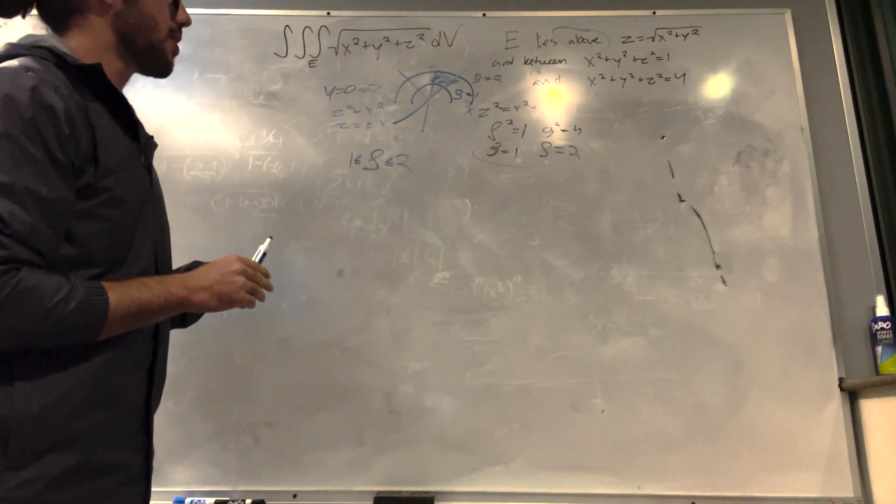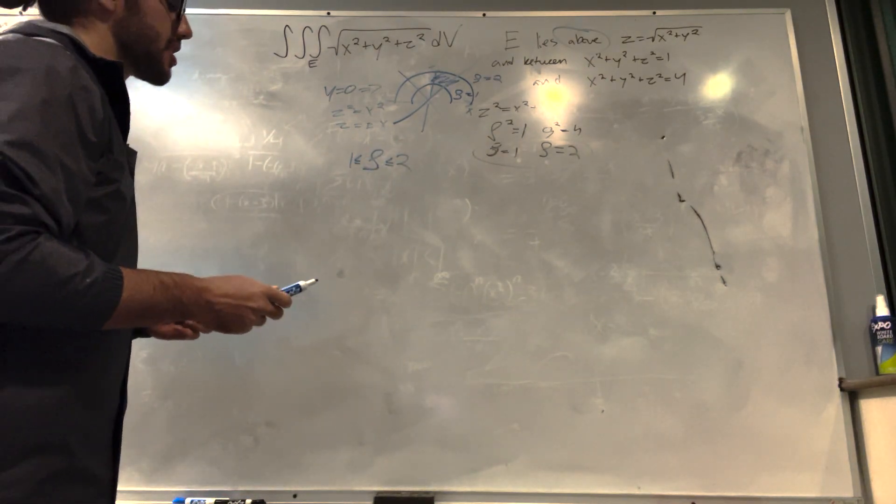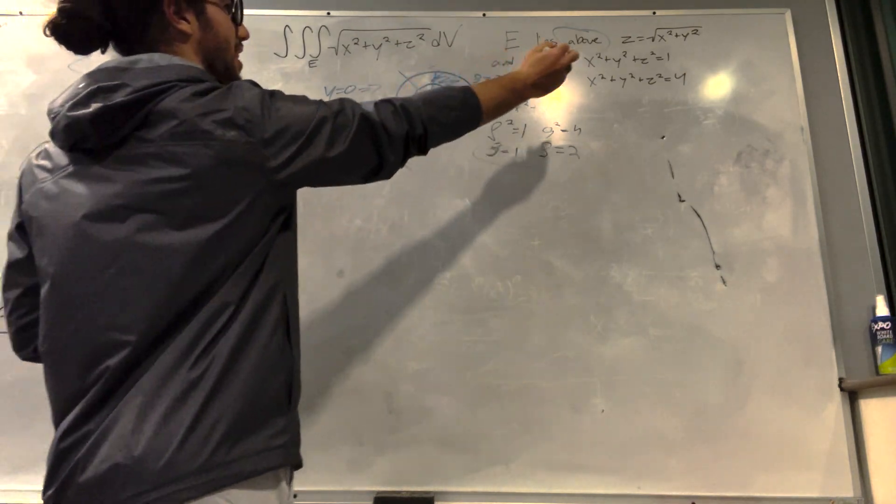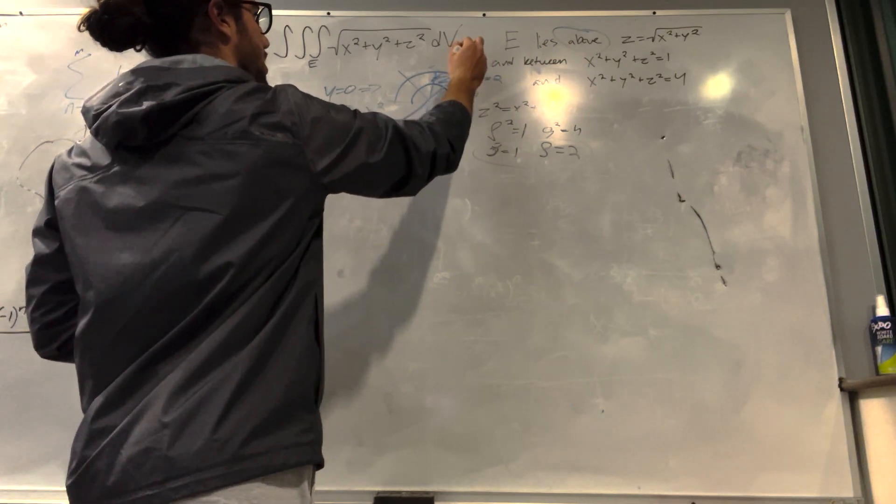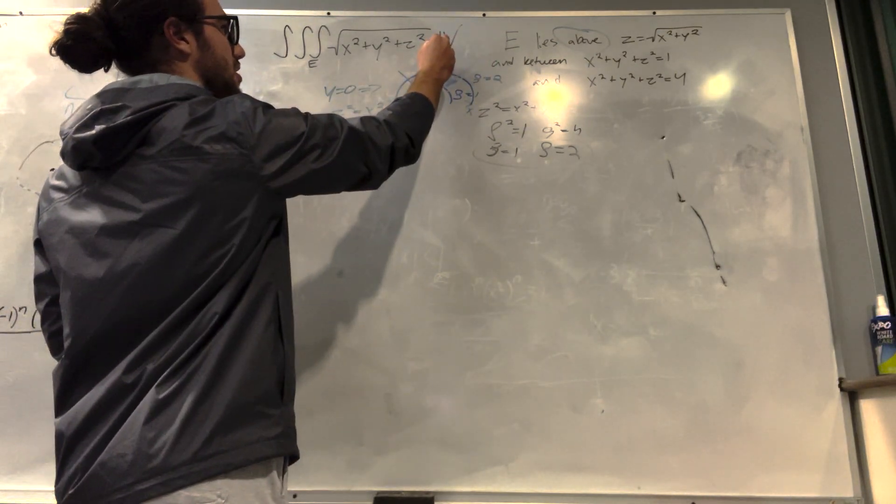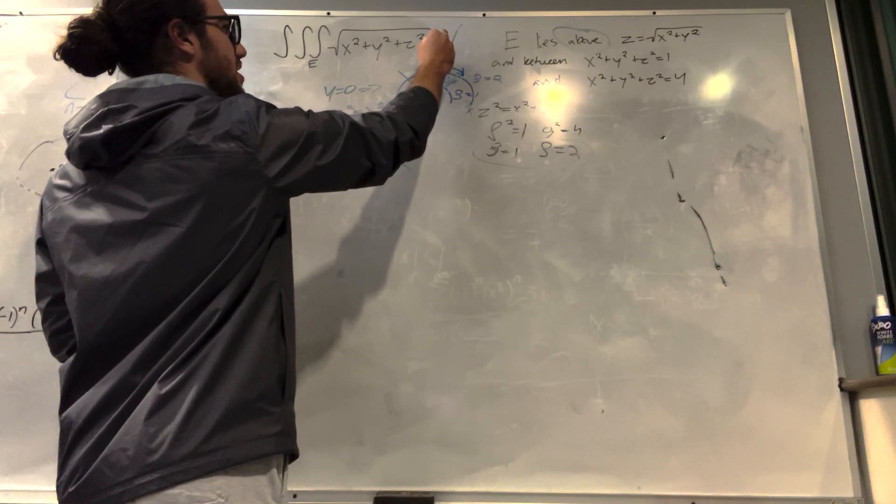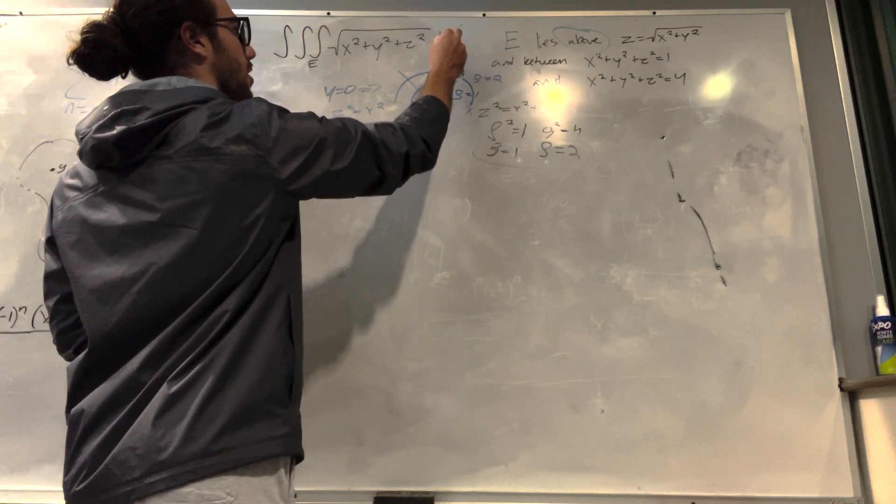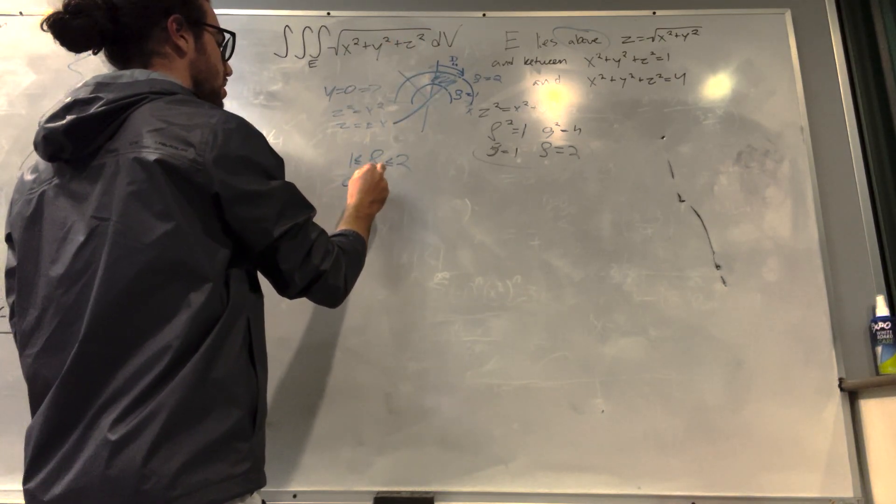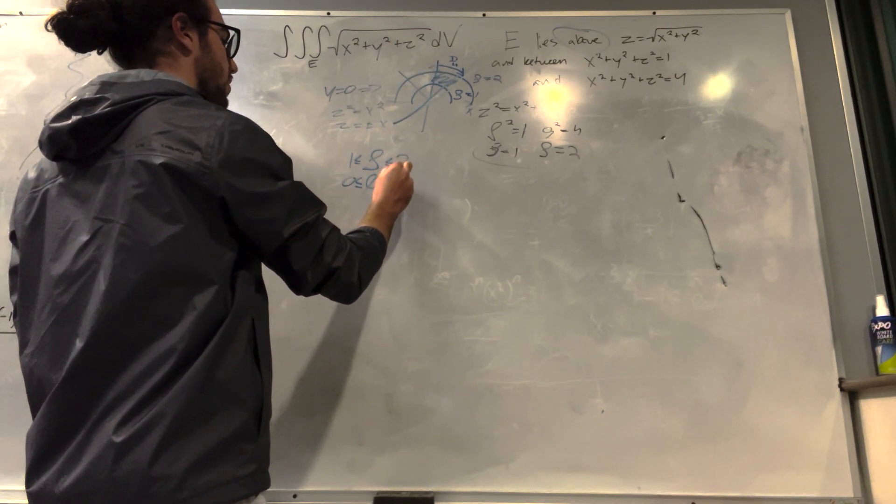So now we need to know what our phi is going to be. So phi, we look at this and we say, well, we can look at this and we know that in a normal cone, this is going to be equal to pi over 4, because that's the distance from this to this is just pi over 4. So it goes from 0 to pi over 4.